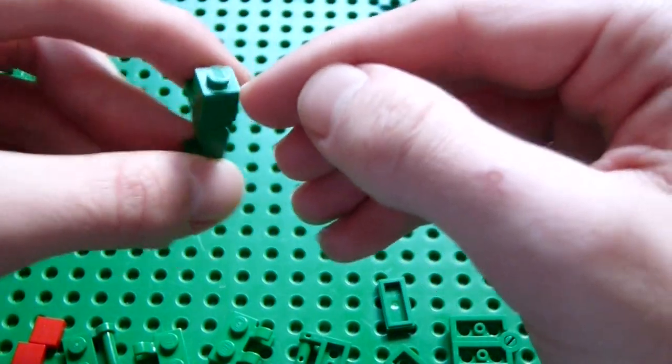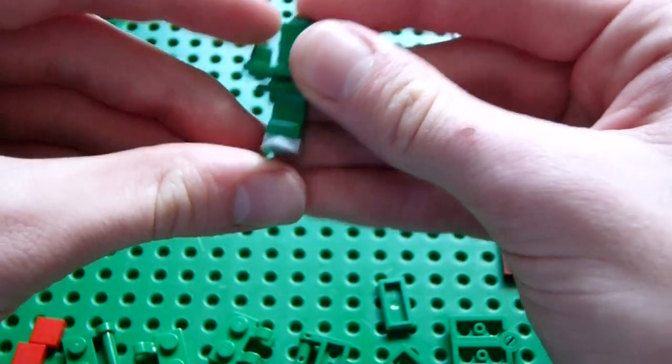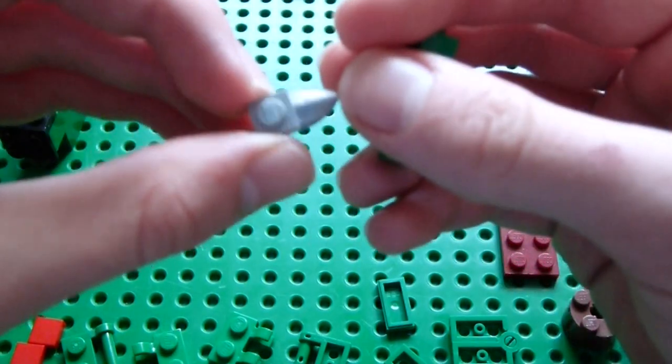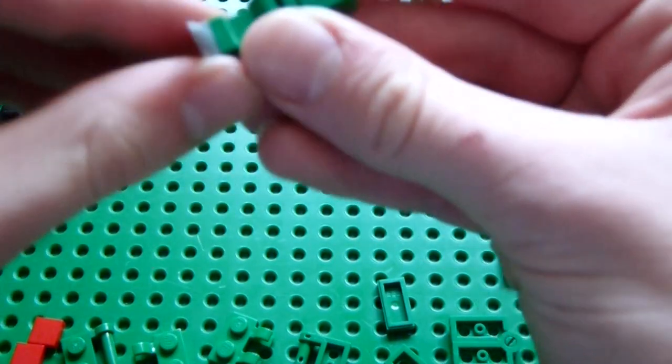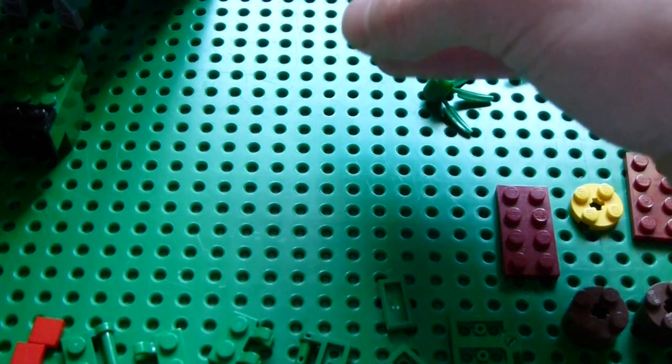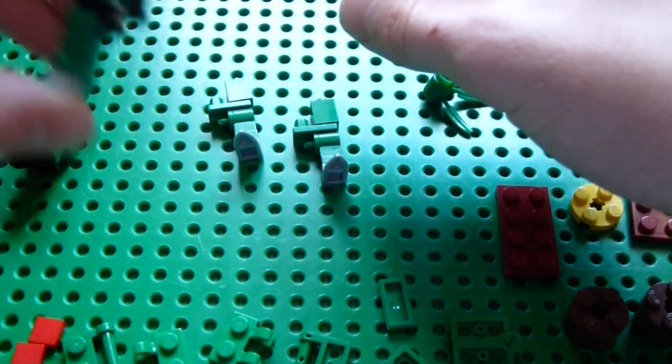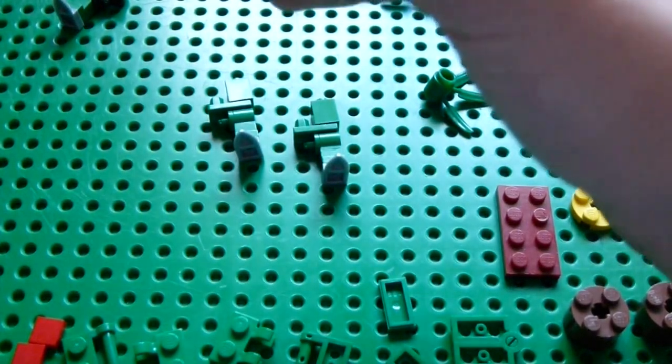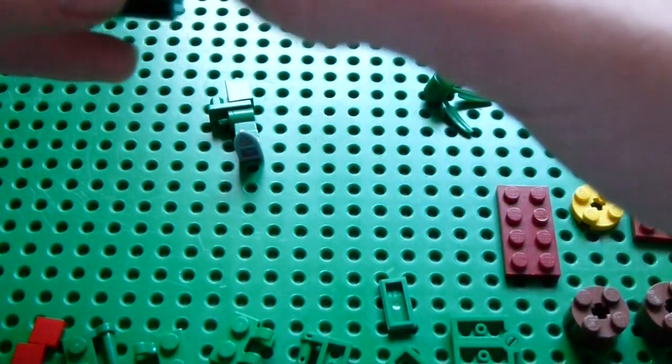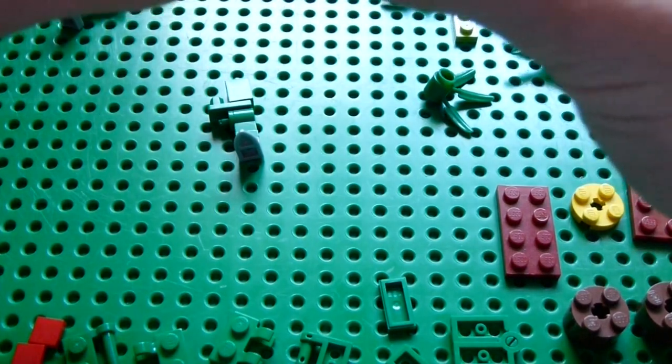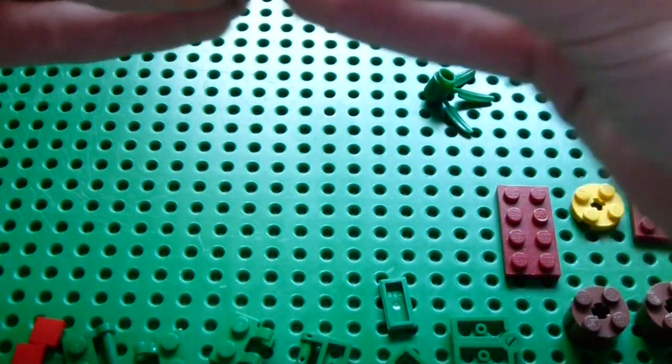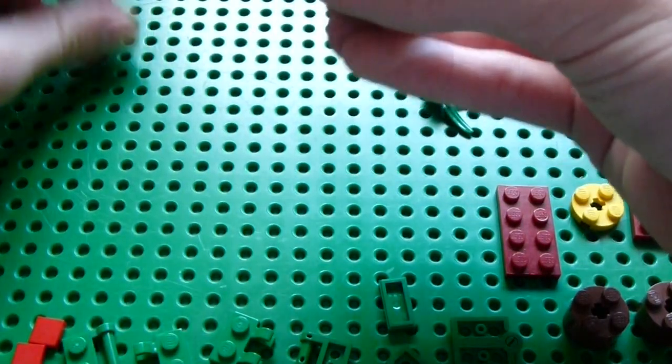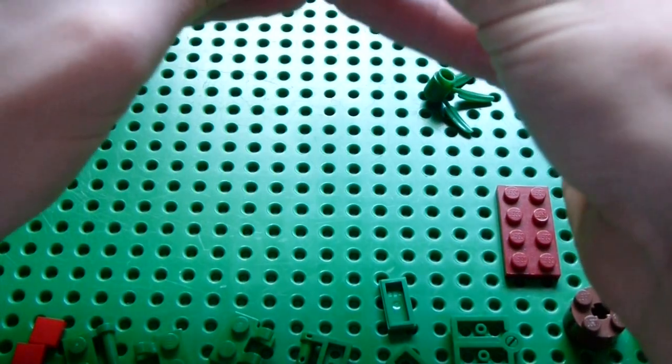Anyway, you put a 1x1 green brick on one side like such. And then one of these little silver tooth pieces, tooth plate pieces on the foot. And you make two like that for each side. And then just place them here, sticking the other stud of the leg into the 2x4 brick.